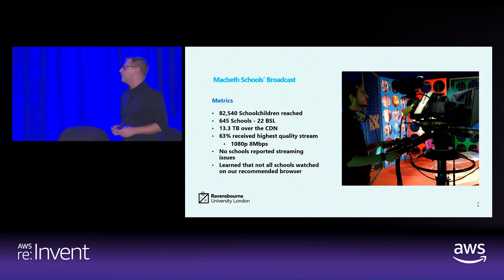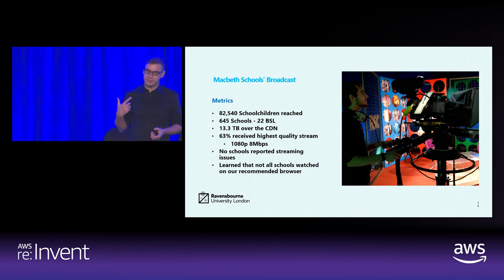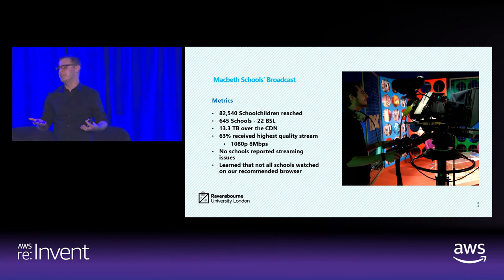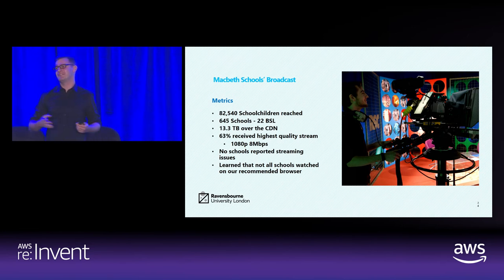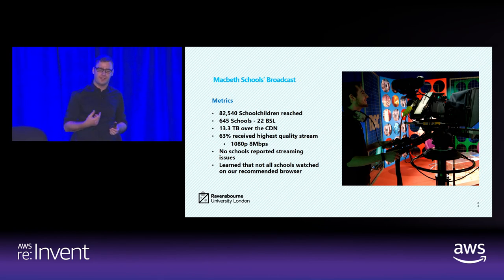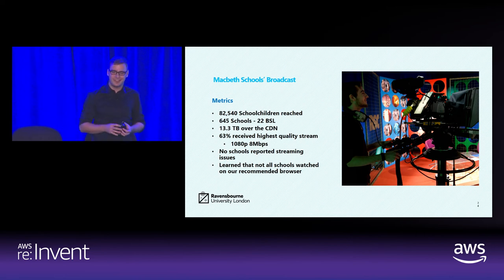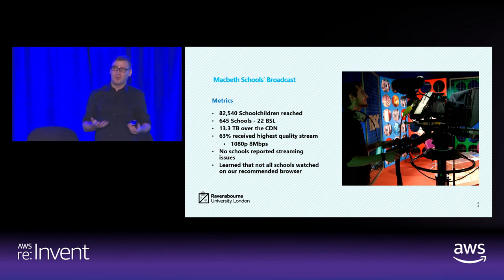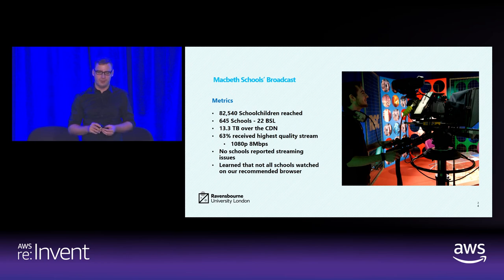The first big use was Macbeth, and we managed to hit over 82,000 school children, 645 schools of which 22 were BSL. We had 13.3 terabytes over the CDN. This was the first time we actually realized how big these broadcasts were in terms of data — we'd never seen that before because everything had been behind closed doors. Looking at the CDN popular objects, we were able to see that 63% received the highest quality stream at 1080p at 8 megabits per second. We had no schools reporting streaming issues. We also realized our audience are watching on four or five different browsers and mobile devices, which changed how we look at the workflow.